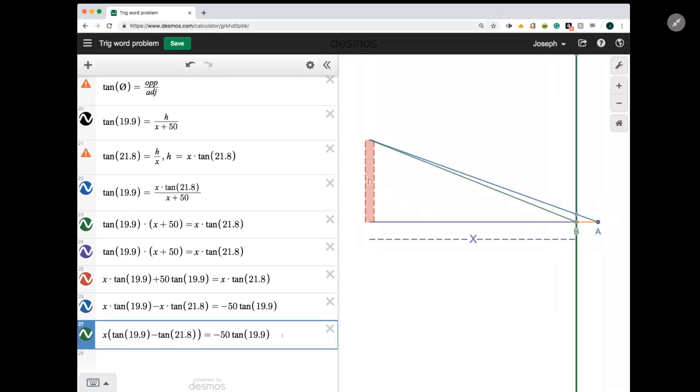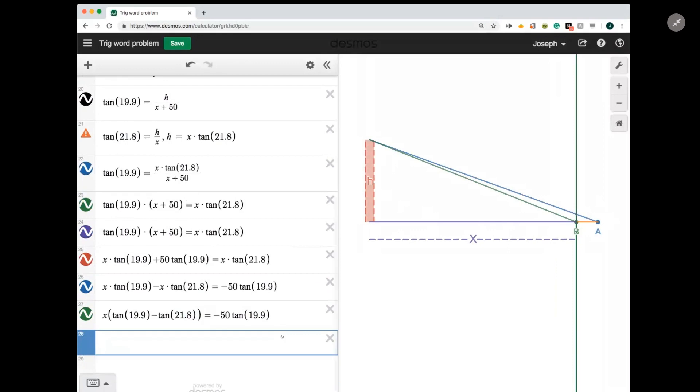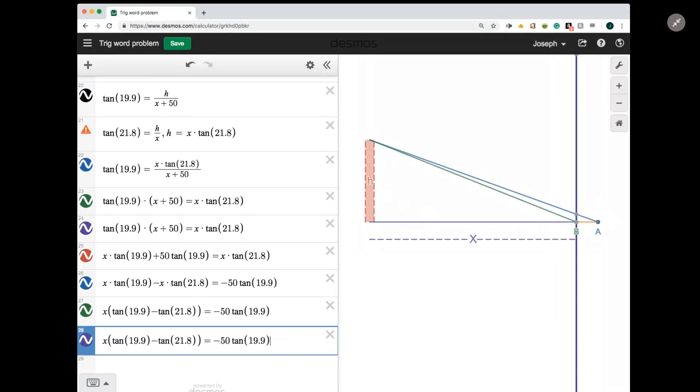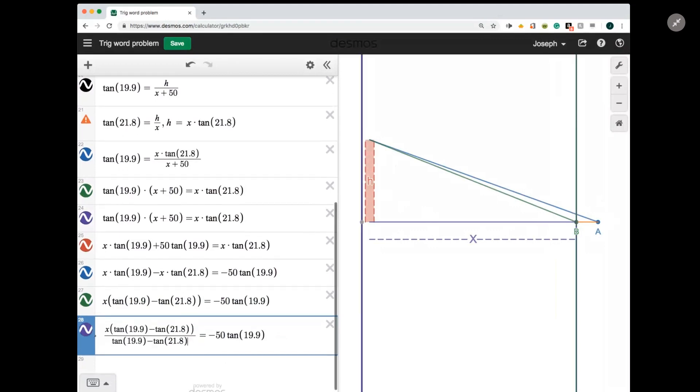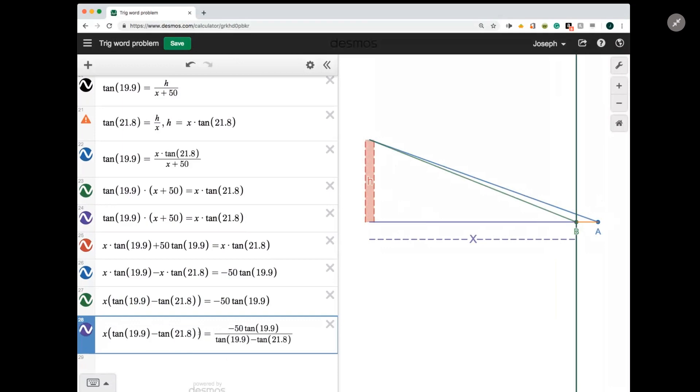Now I've factored out x. And once I've done that, I can simply divide both sides by the coefficient of x, which is just the difference between these two tangent functions. So I'm going to divide both sides by that difference. Which means that the left side just becomes the value x, which was the whole point. So apparently x is 476.6 feet. That's this value over here.